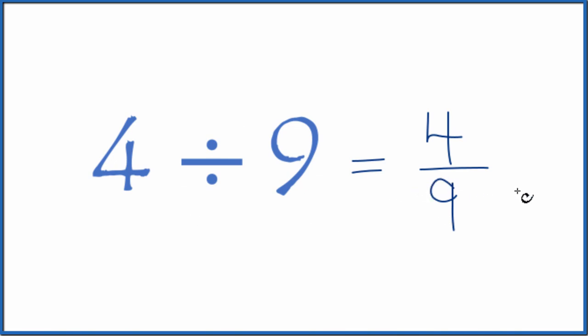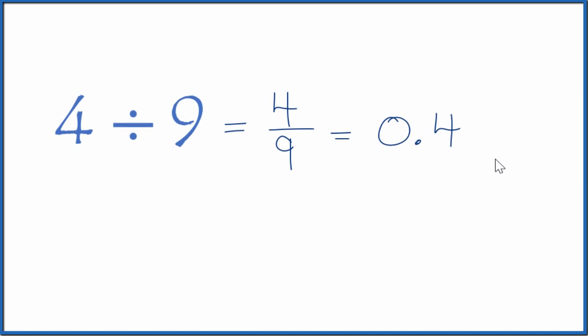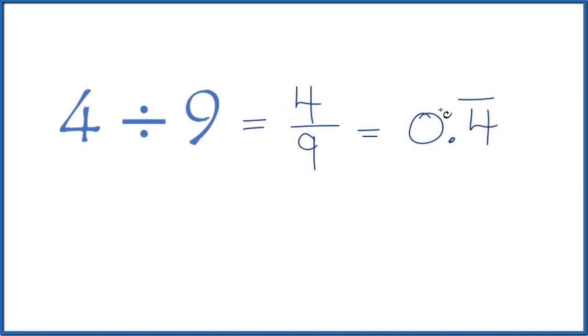We could also just do this on our calculator. Divide 4 by 9. We end up with 0.4444. The 4s just keep repeating. So let's get rid of these, and then let's put a line over it to show that this is a repeating decimal.